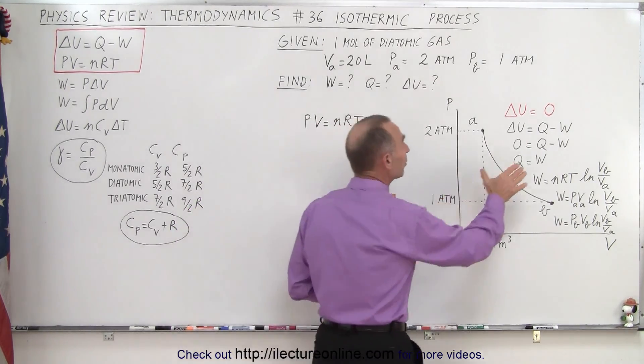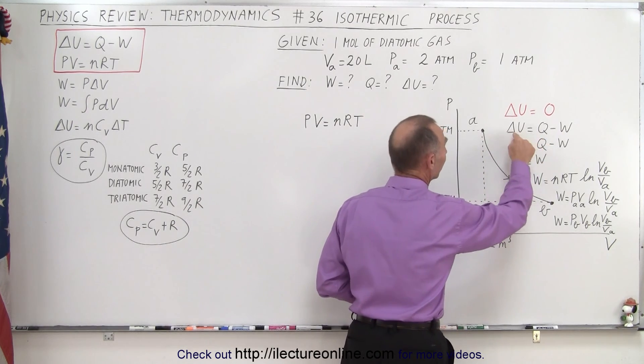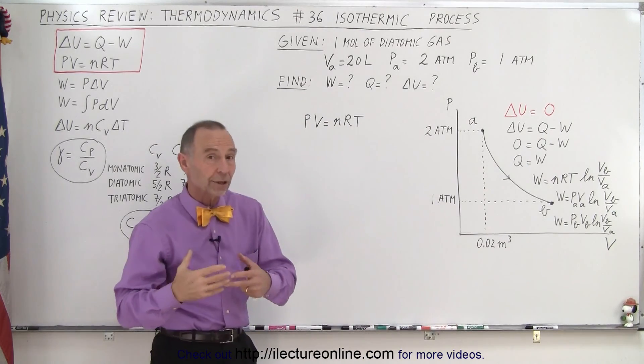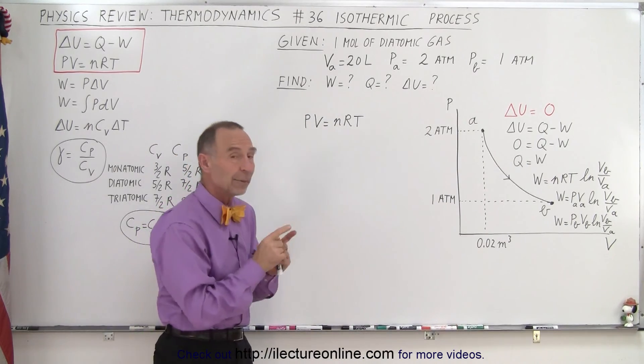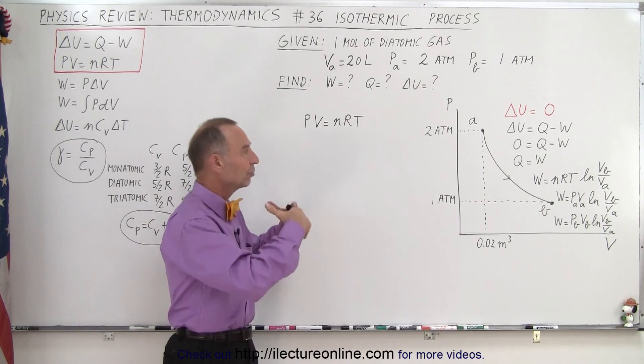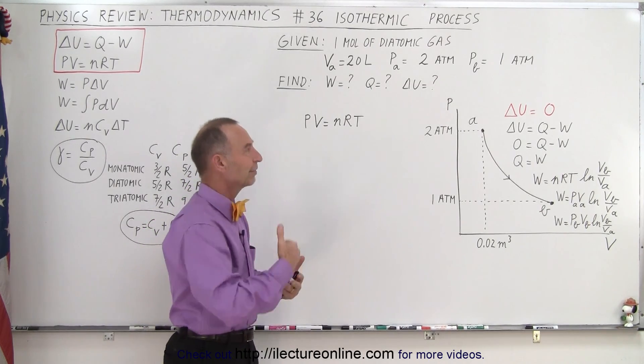That makes it easy when we look at the first law of thermodynamics. Delta U goes to zero, which means that Q equals W. In other words, the amount of work done by the gas is equal to the amount of heat added to the gas. All the heat added to the gas is utilized to do the work, and none of it is added to the internal energy of the gas in an isothermic process.